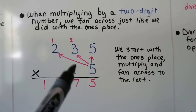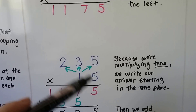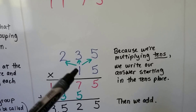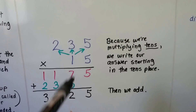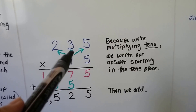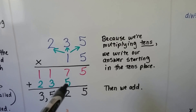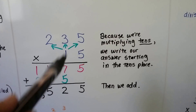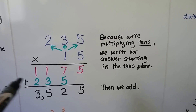Now we need to do 235 times 15. We've got this one in the tens place, so now that we're done doing the five, the one gets fanned to the ones place, the tens place, the hundreds place. Because we're multiplying by ten, we start writing our answer in the tens place — there's an empty space here. One times five is five, one times three is three, one times two is two.